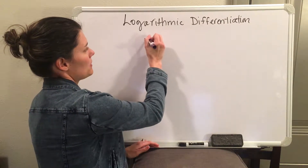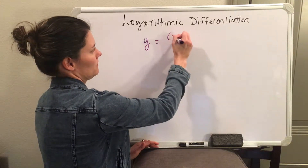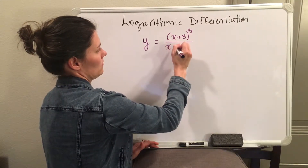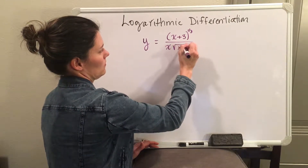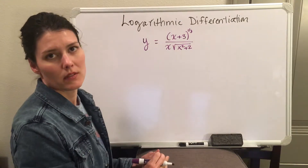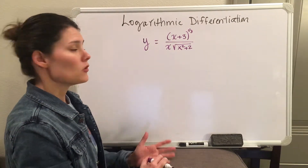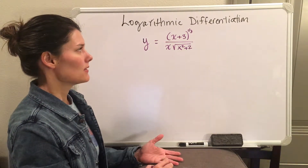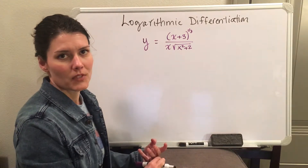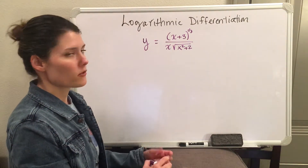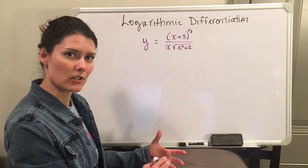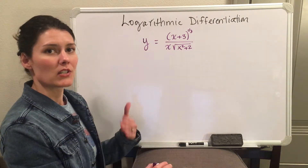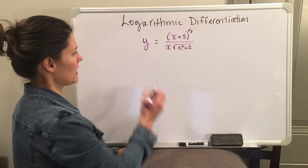So let's say you have this complicated function and you want to take the derivative. You could use a quotient rule with two chain rules and a product rule, but that would be a lot of calculus. So there is another technique called logarithmic differentiation to help us break down the function first and make the calculus easier. The first step is you're going to take the natural log of both sides.